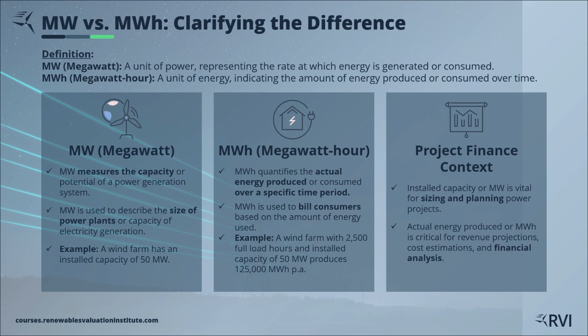In project finance, these units have distinct roles. Megawatt is crucial for sizing power projects and planning the capacity of electricity generation — it helps determine the scale of a power plant and its potential output. Megawatt hour, however, holds significant weight in revenue projections, cost estimations, and financial analysis. It's the measure that translates into billing consumers and calculating revenue for power generation.